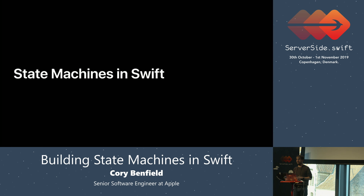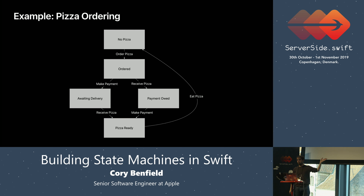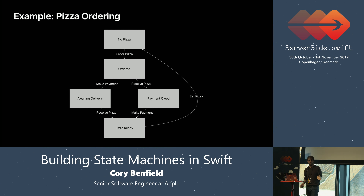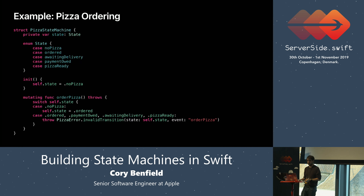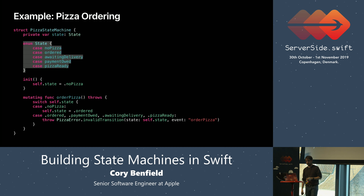So what does Swift give us for this? Let's talk about pizza again. This is a smallish state machine with a few states and a few inputs. We can implement this in Swift. Here is a rough shape — a sample of our pizza state machine. It has a few parts.